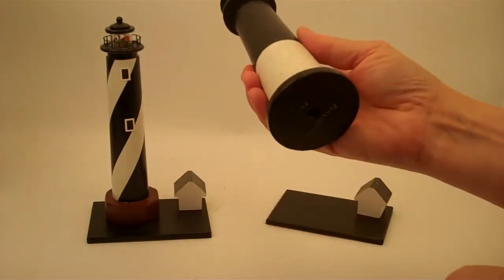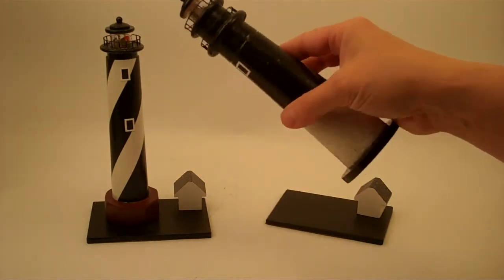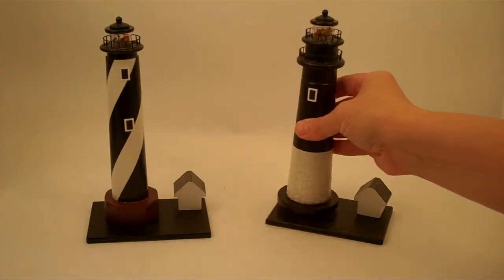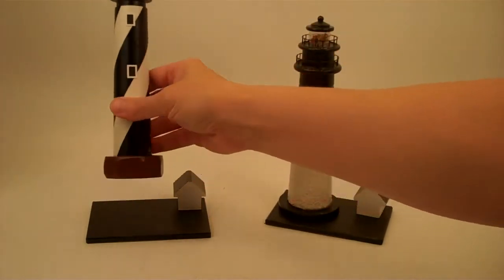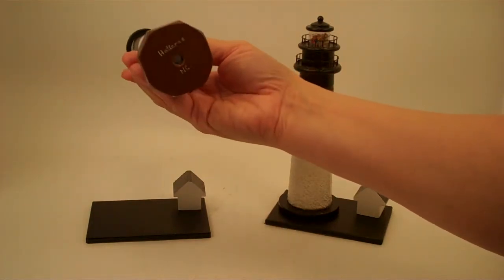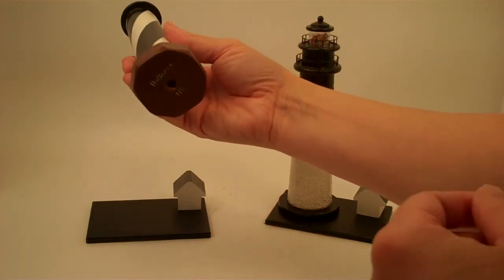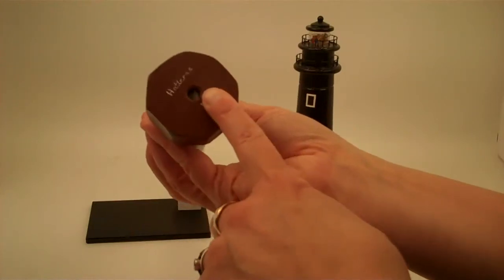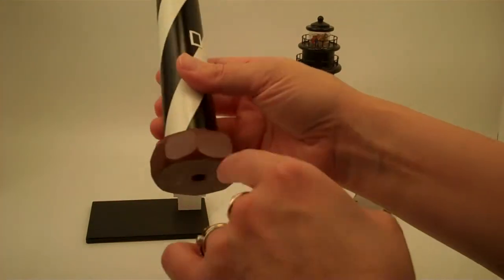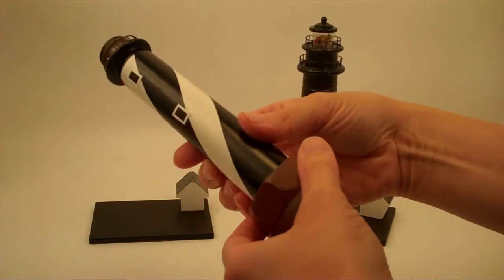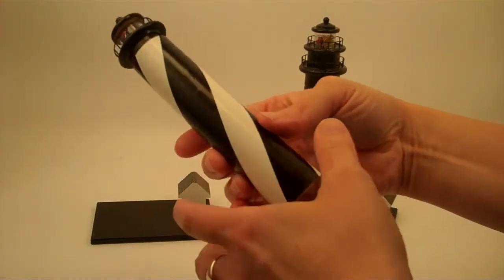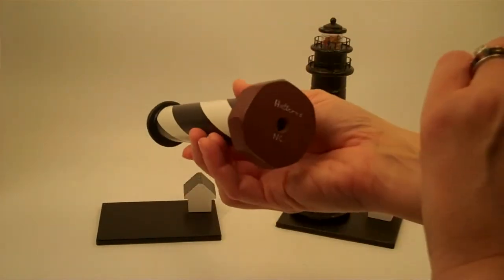You roll the entire kaleidoscope in your hand to tumble the beads at the end, and the same design, except for the exterior decoration, is used for all the lighthouse kaleidoscopes. The eyepiece is in the base of the lighthouse, and you roll the entire kaleidoscope to turn and tumble the beads in the object chamber.